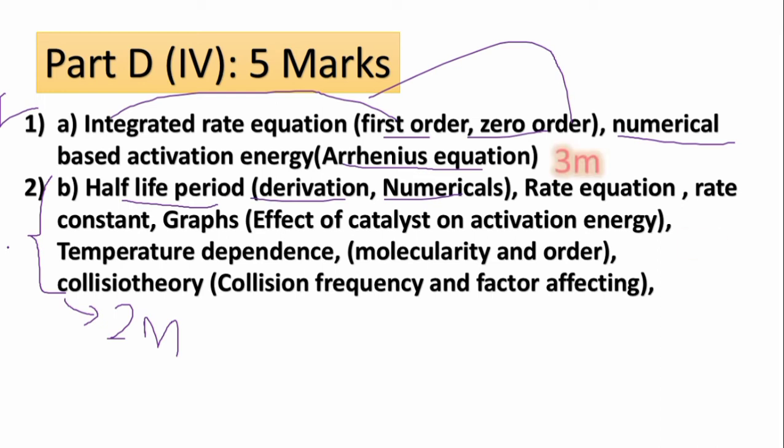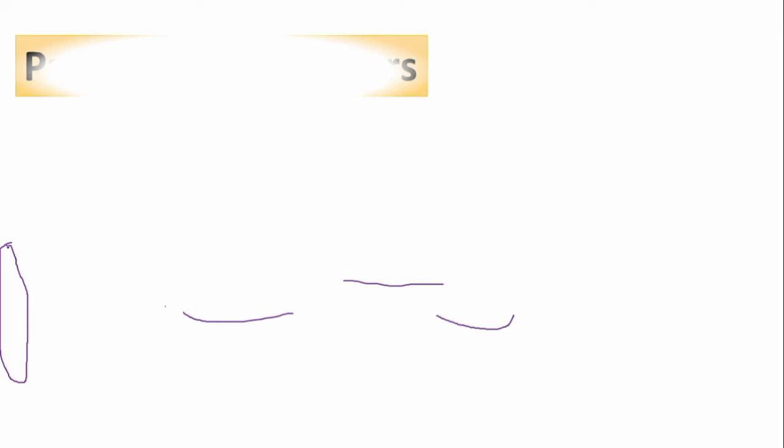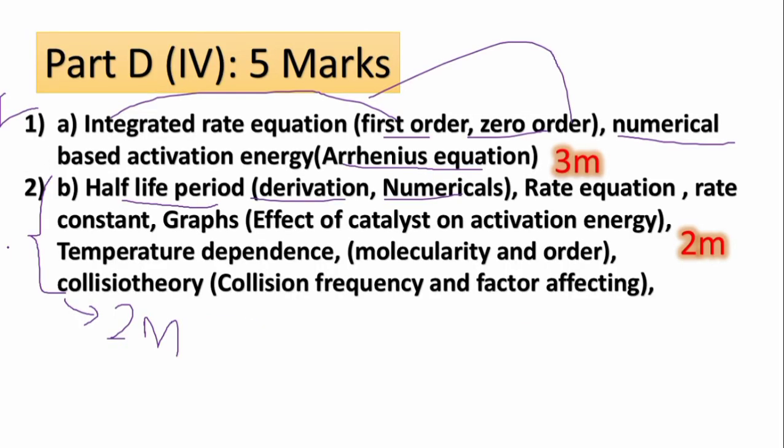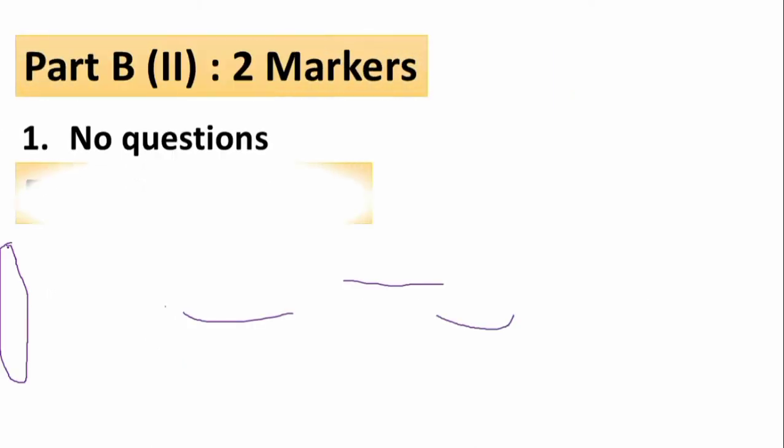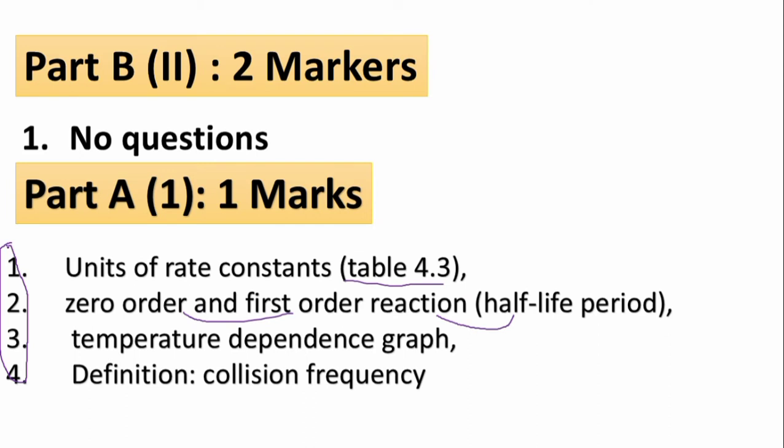According to the last year blueprint there's no two marks to the question. But if they ask also, they should ask from here. It's part B two marks. If they include this year in blueprint, then in one mark units of rate constant, you should go inside the table 4.3.